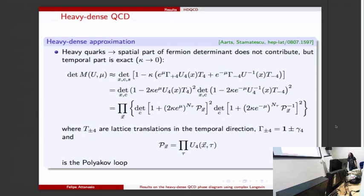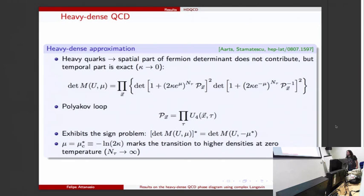Here just for completeness I'm showing the lattice translation in the time direction and also these Dirac matrices. Why we studied this model: it exhibits a sign problem, so this determinant is also complex for real chemical potential.